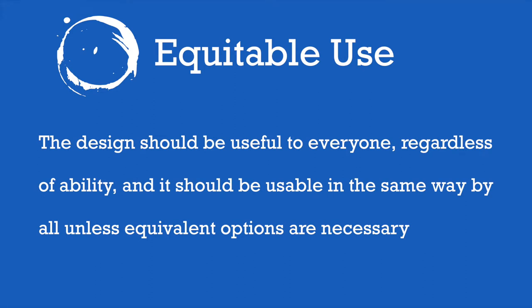The first NDA principle is equitable use. A design should be useful to everyone, regardless of ability, and it should be usable in the same way by all, unless equivalent options are necessary. This design should be usable in just about the same way by every single person, no matter what needs they have, or regardless of whether they have no special needs at all. This design should work for everybody in just about the same way, unless something really specific needs to be done for a specific user or group of users.